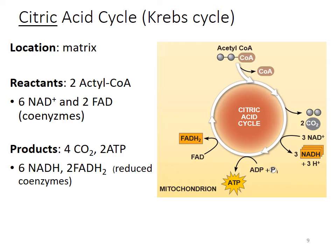That brings us to the citric acid cycle, sometimes called the Krebs cycle. This happens in the mitochondrial matrix. The reactants are the acetyl coenzyme A produced in the previous reaction, plus NAD and FAD — coenzymes that serve as electron carriers. The products are carbon dioxide, ATP, NADH, and FADH2. NADH and FADH2 are the reduced coenzymes — when NAD picks up electrons it becomes NADH, and when FAD picks up electrons it becomes FADH2. The citric acid cycle produces some ATP, but also sets us up for the next step.